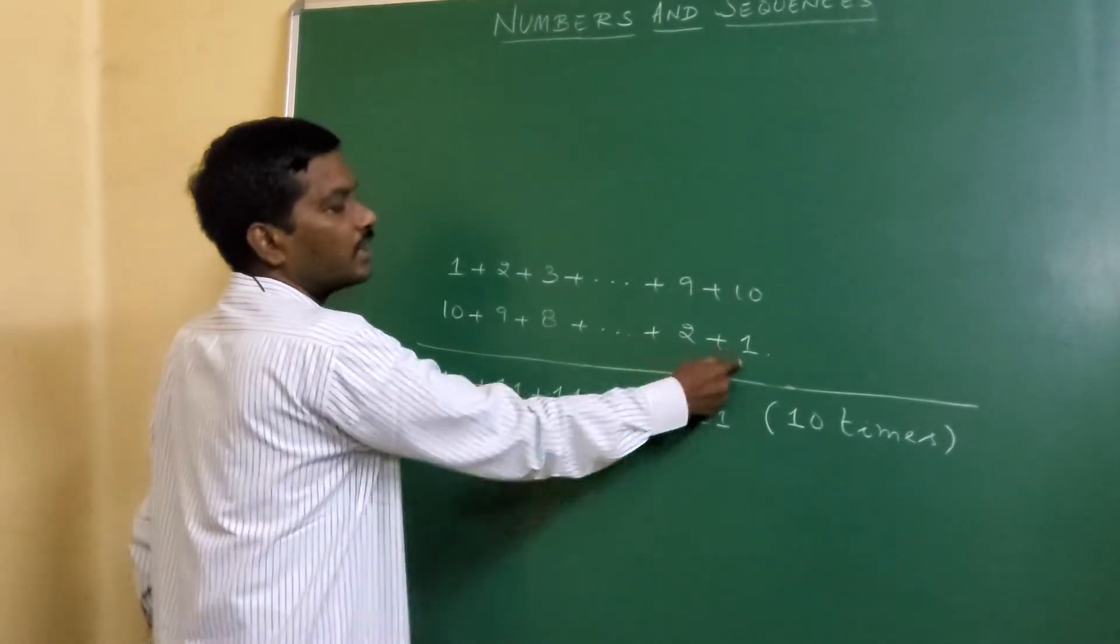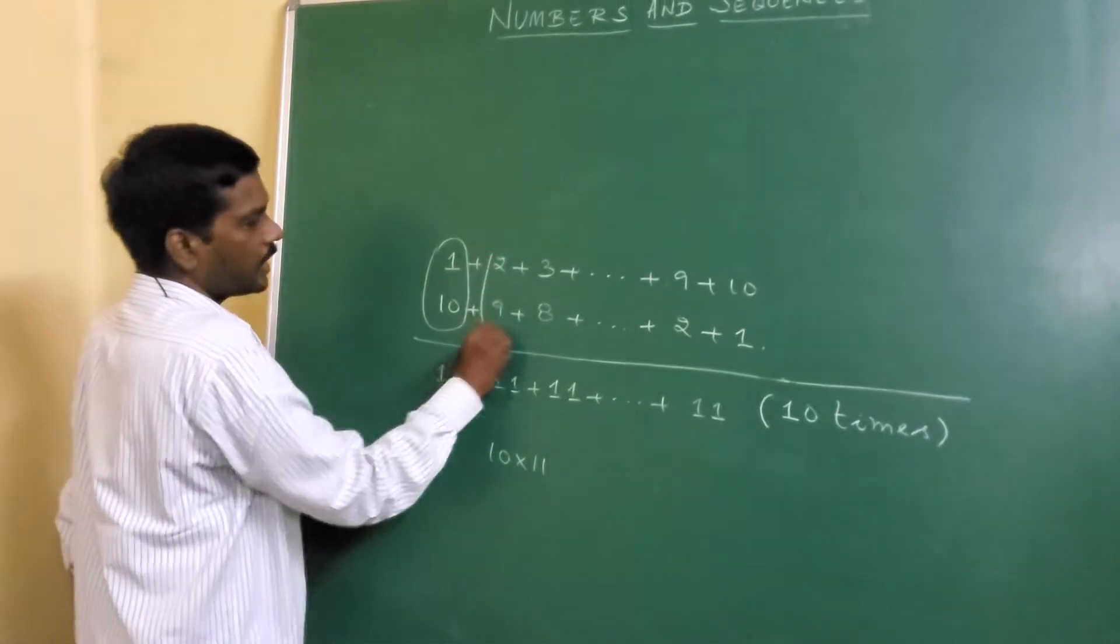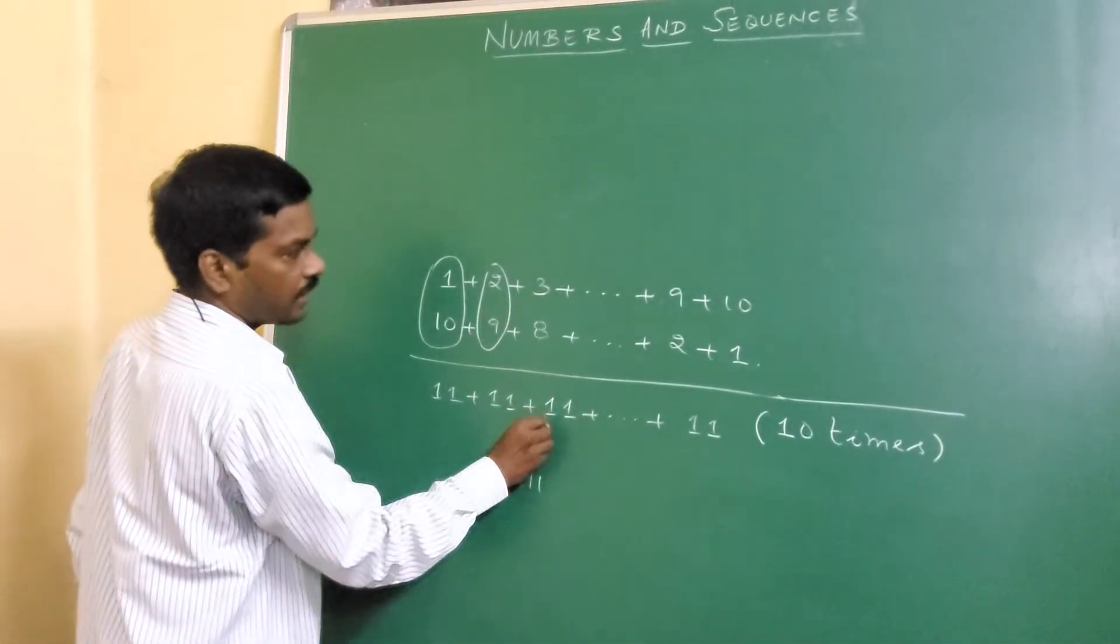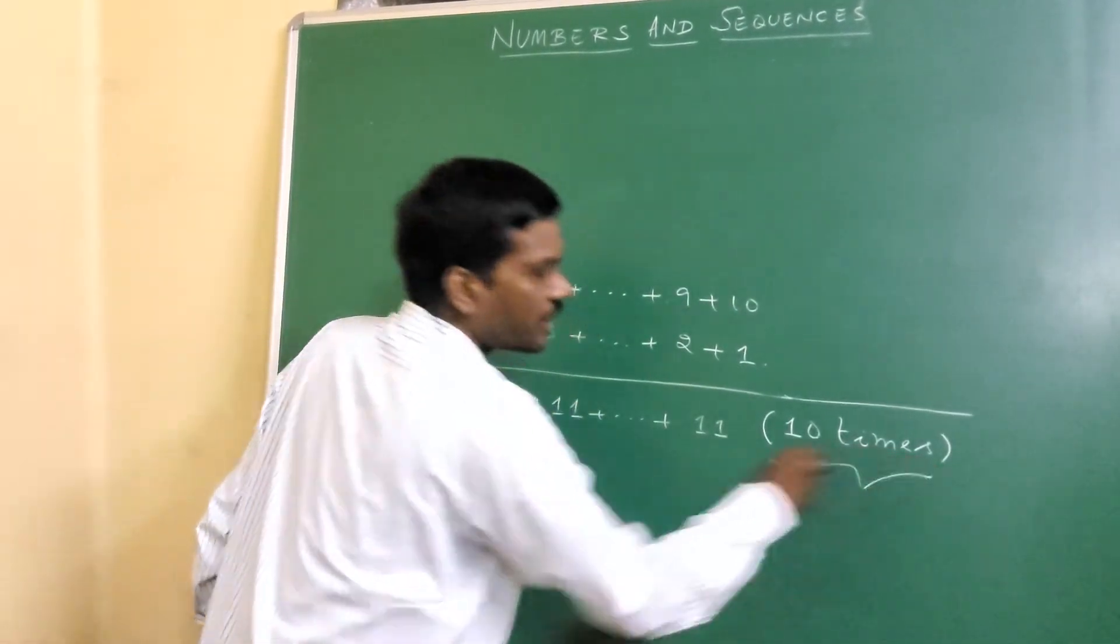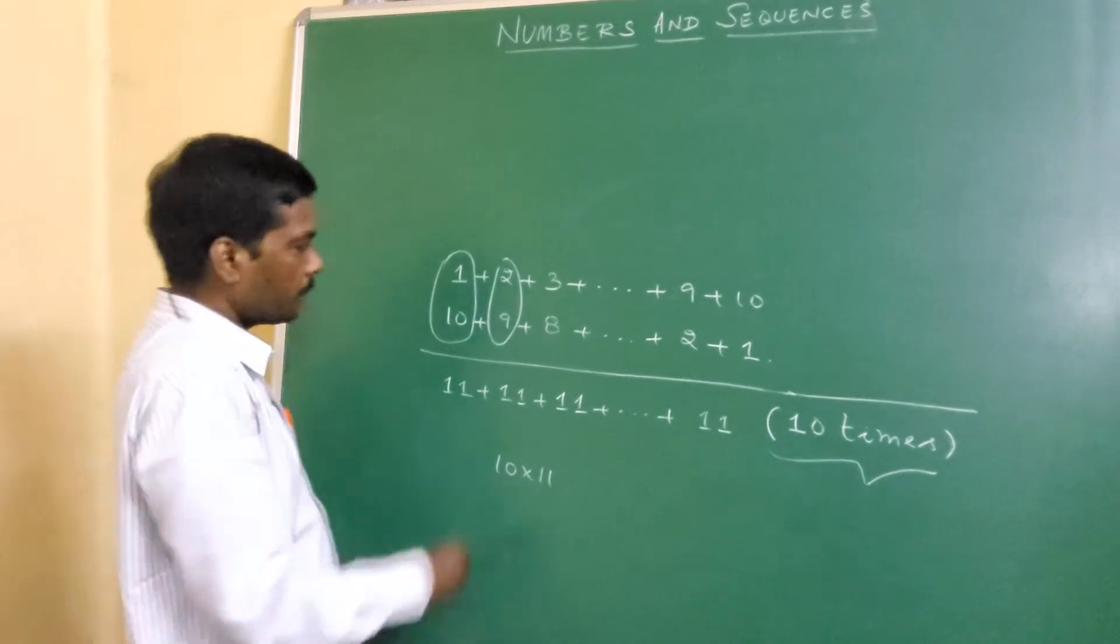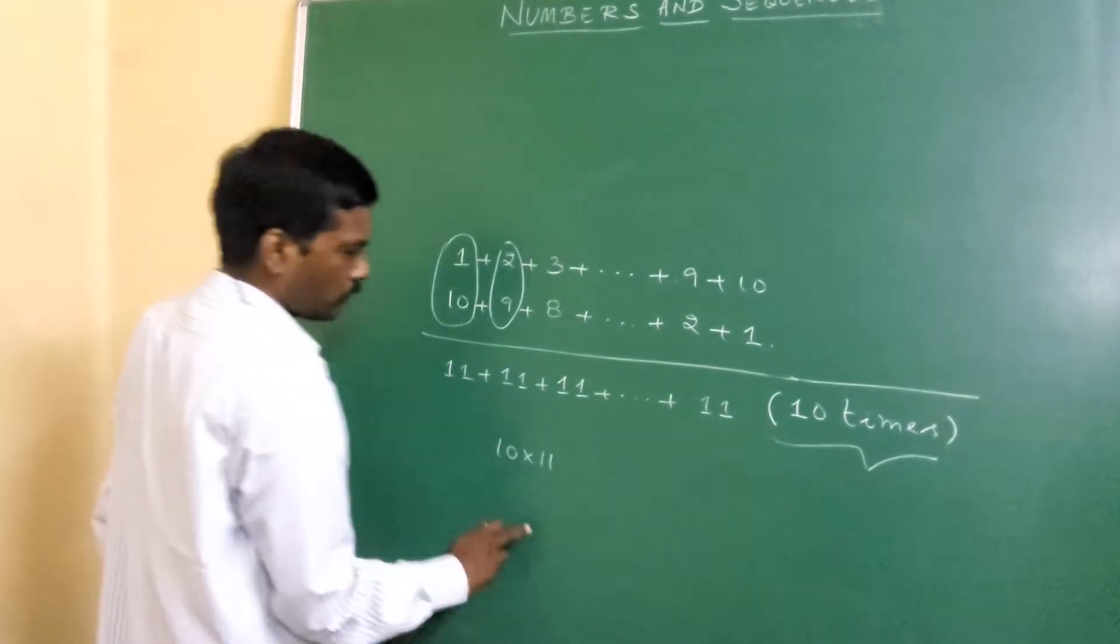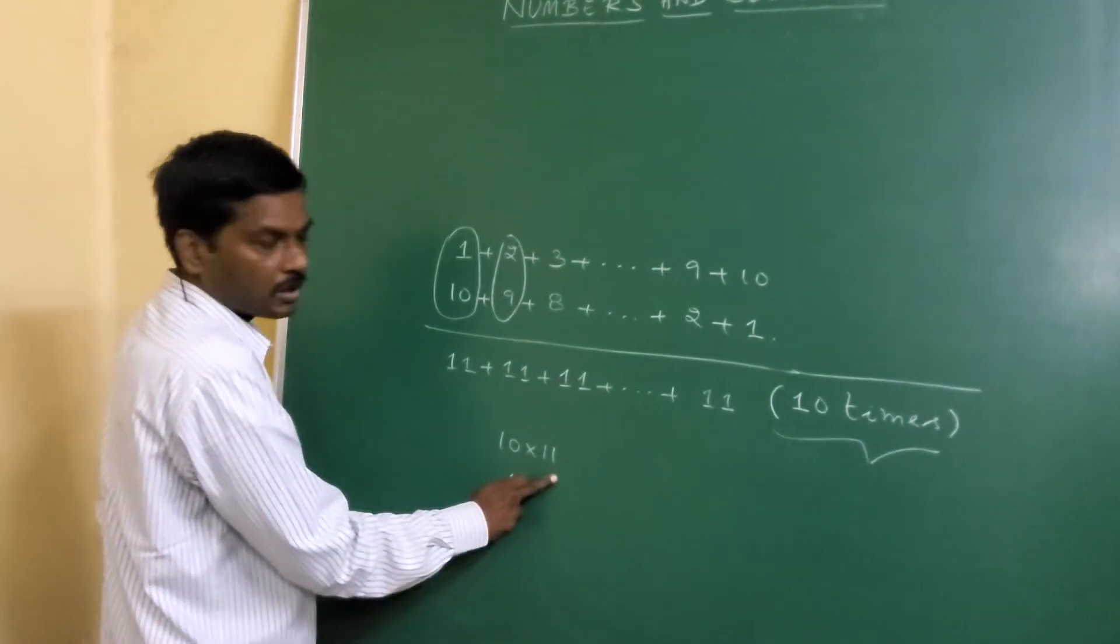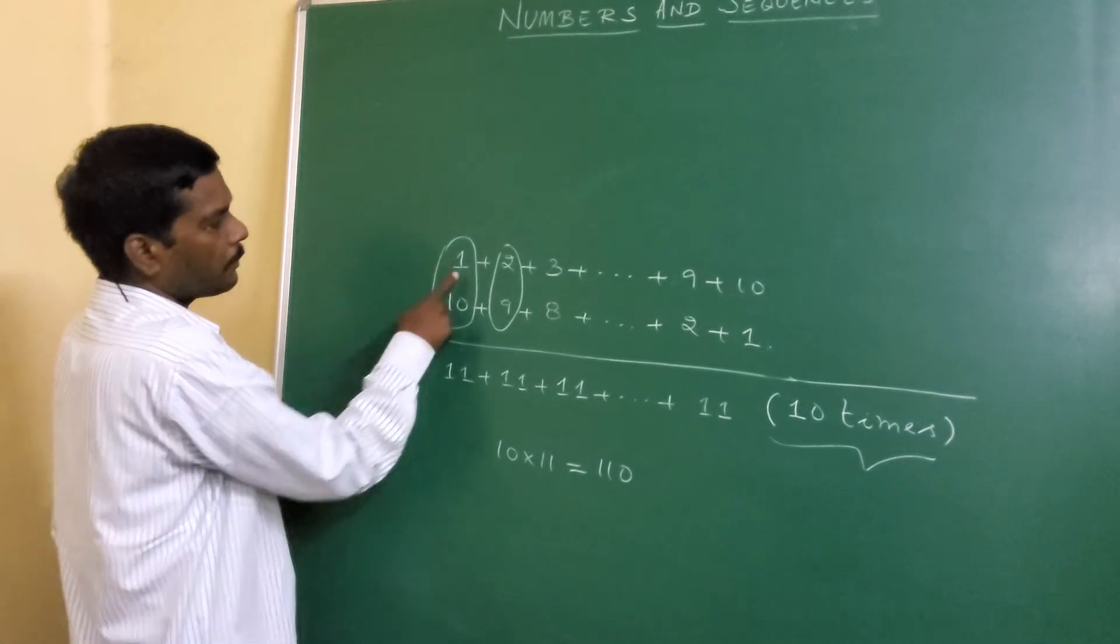Now, let's add the two rows. 10 plus 1 equals 11, 9 plus 2 equals 11, and so on. 11 appears 10 times as a common result. Then we add these terms together.